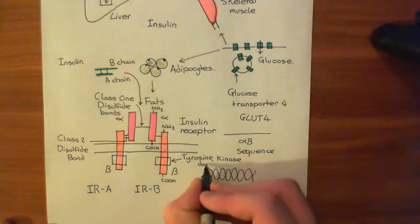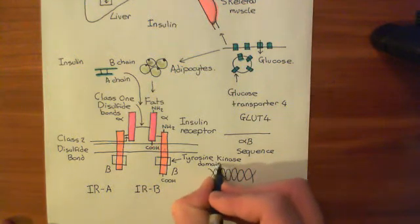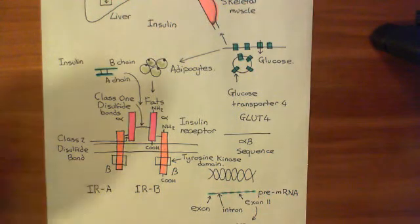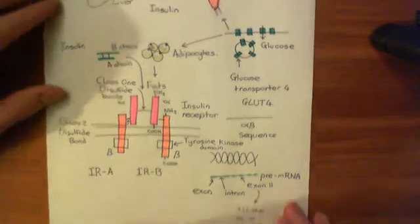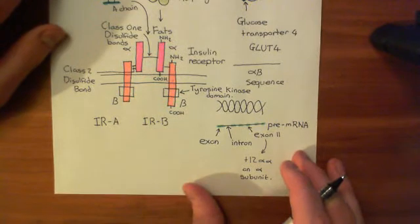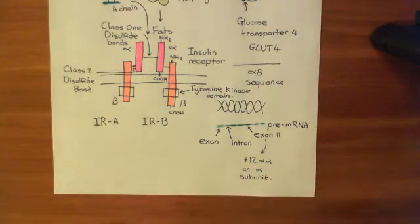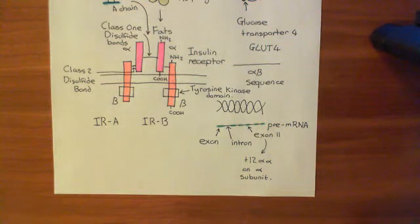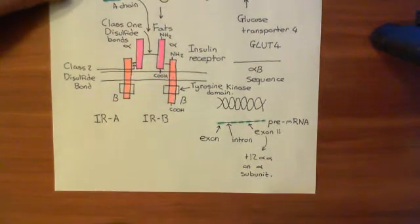These domains are tyrosine kinase enzymes — they can function as tyrosine kinase enzymes. Tyrosine kinase enzymes add phosphate groups onto tyrosine residues within proteins.